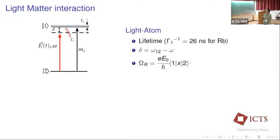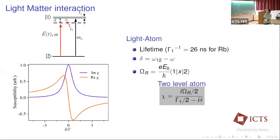Another very important parameter used in all experiments is the Rabi frequency, which depends on the interaction strength of the light and atoms. If we use a laser light whose frequency is detuned, we can represent the interaction of this light with matter mathematically by the susceptibility. The real part of the susceptibility is proportional to the dispersion, and the imaginary part gives us the absorption in the medium.